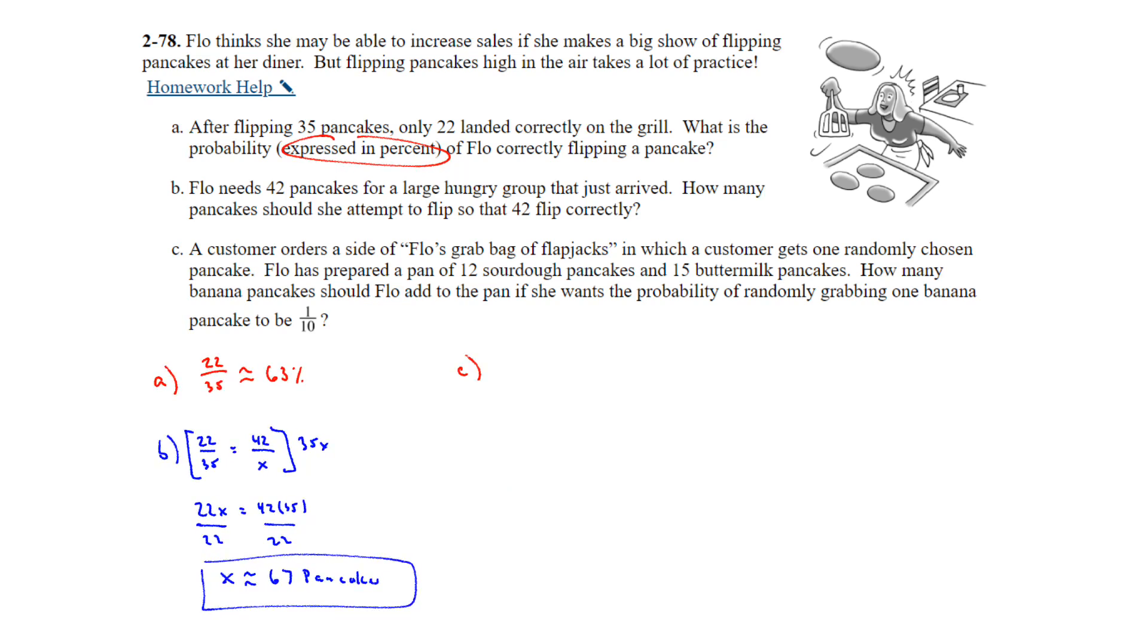Alright, on to Part C. A customer orders a side of Flo's grab bag of flapjacks, in which a customer gets one randomly chosen pancake. Flo has prepared a pan of 12 sourdough pancakes and 15 buttermilk pancakes. How many banana pancakes should Flo add to the pan if she wants the probability of randomly grabbing one banana pancake to be 1 out of 10? So I'm sure there's lots of different ways to look at this. The way I'm thinking right now is that 1 out of 10 means you need to have 1 banana pancake for every 10 total. Well, right now we have a total of 27 already made. So if I do 1 out of 10, then to go up, I would have to do 2 out of 20, which still is less than what I currently have.